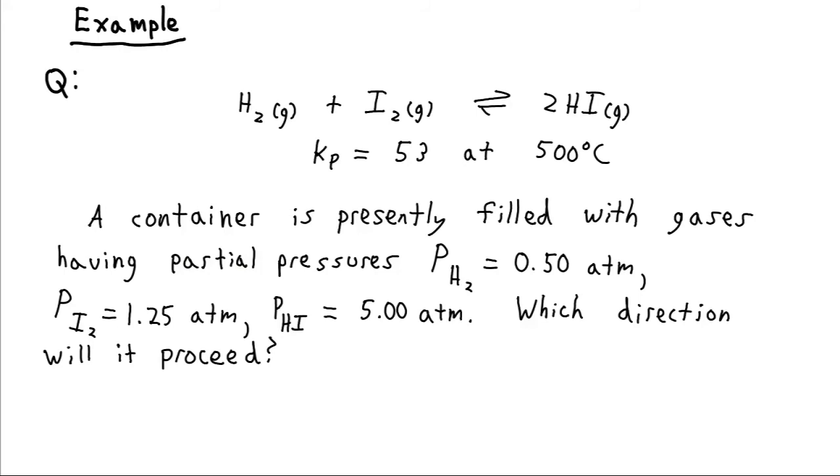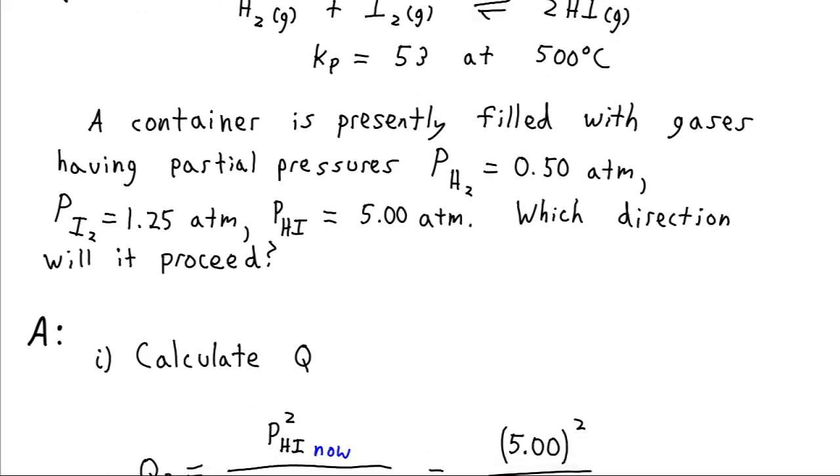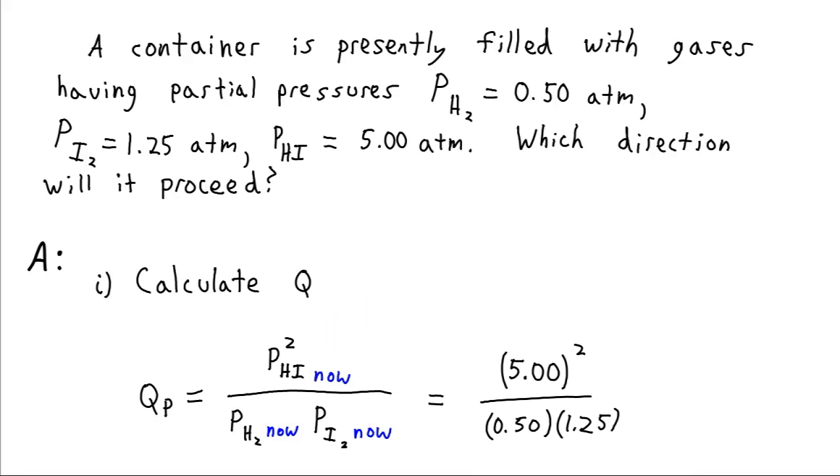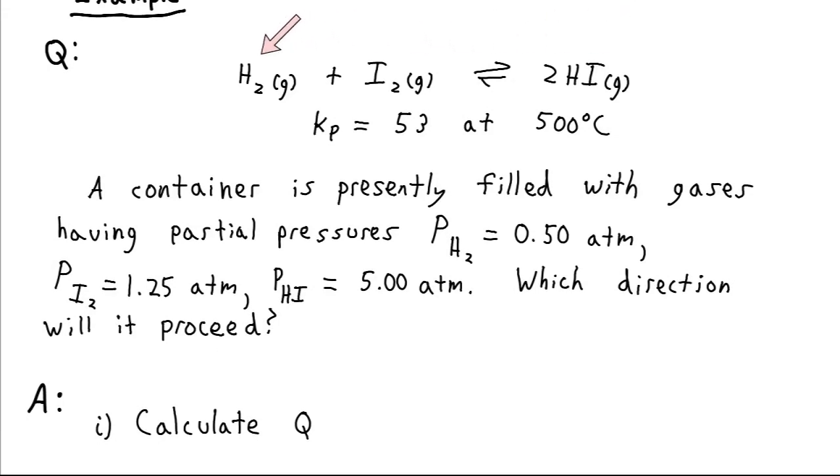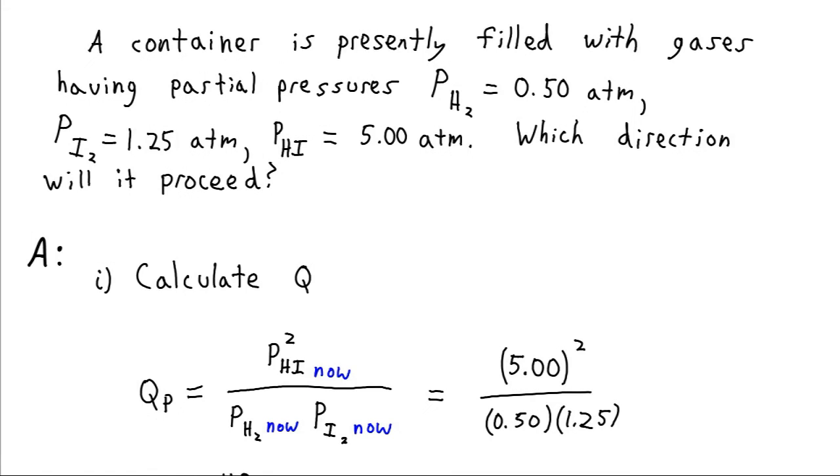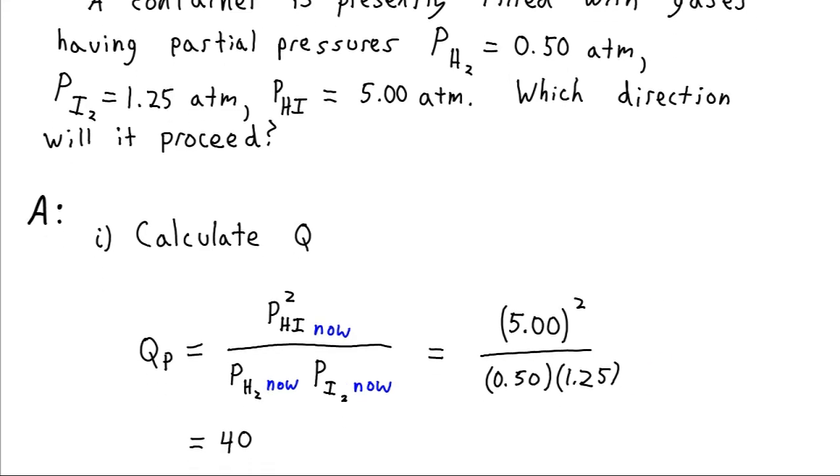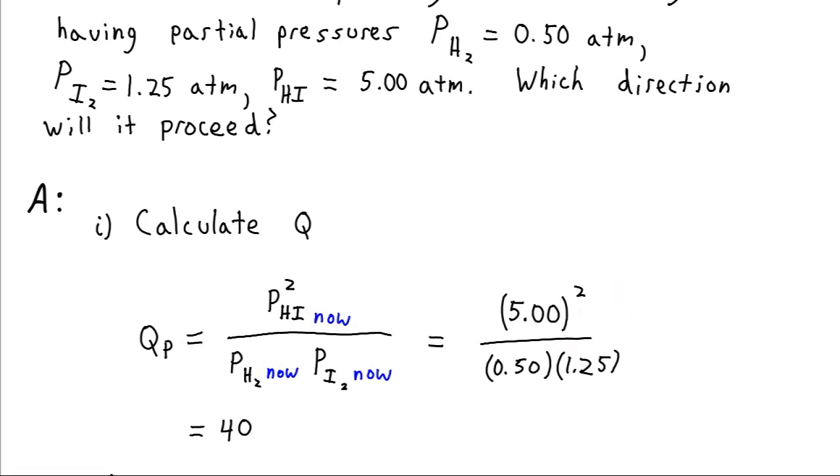Well, to determine this, first we need to calculate Q. So we go ahead and write down our equilibrium expression, or the form that matches it for Q. And so we take the pressure of our hydrogen iodide squared over the pressure of the iodine and the hydrogen, which are our reactants, and just plug those numbers in. So we have 5 atm squared over 0.5 and 1.25. The difference between this and the equilibrium is that these aren't the equilibrium pressures. And we get a value of 40.